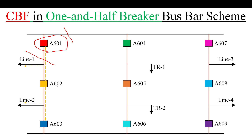If A602 fails to operate, how can it be isolated from both ends? For this purpose the tripping will be extended from the A602 CBF relay to Line 1 via A601, to Line 2, and to A603.